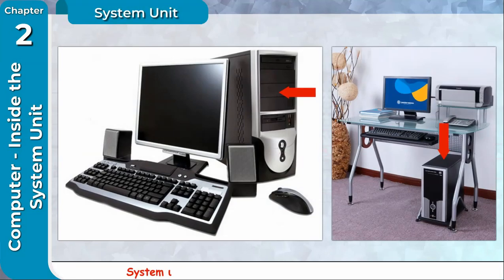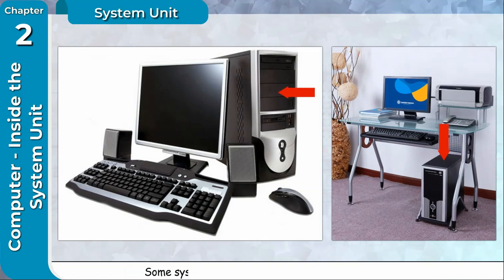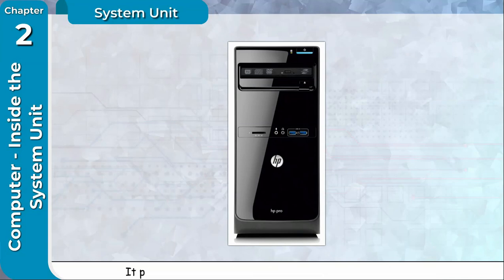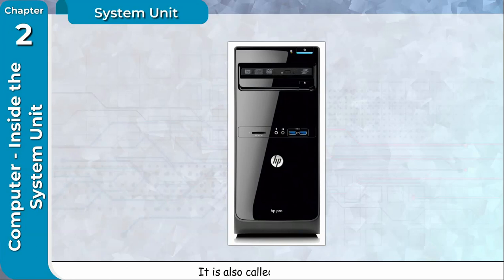System Unit is a box-like case that stands near the monitor. Some system units are also placed below the monitor. System Unit is the most important part of the computer system. It protects the internal electronic components from damage. It is also called computer case.